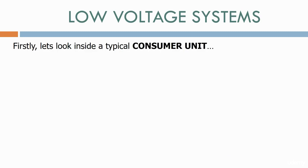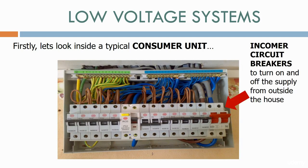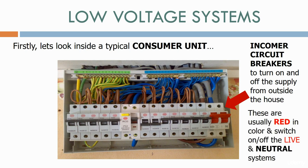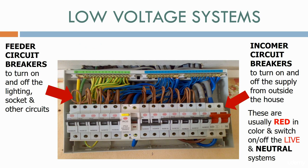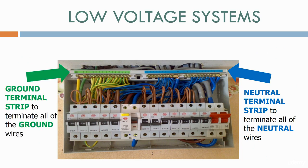Let's look inside a typical consumer unit. The first thing we have is the consumer circuit breakers to turn on and off the supply from outside the house. These are usually red in colour and switch on and off the live and neutral systems. We also have feeder circuit breakers to turn on and off the lighting, socket and other circuits — these normally switch the live feed only. A neutral terminal strip to terminate all of the neutral wires, and finally a ground terminal strip to terminate all of the ground wires. You will find all of these basic elements in any house consumer unit.